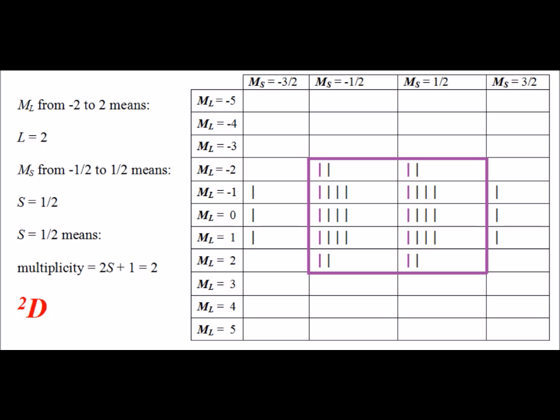Next, after removing all the brown colored microstate ticks, we again look for the largest rectangular region with at least one tick mark in each box, and we see one in the purple region. This box runs from big M sub S equals minus one half to plus one half, so the total spin S equals one half. Big M sub L goes from minus two to plus two, telling us orbital angular momentum L equals two. L equal to two corresponds to capital D, and the spin multiplicity is two, giving us a term symbol of doublet D.